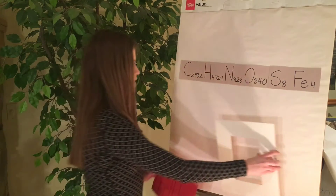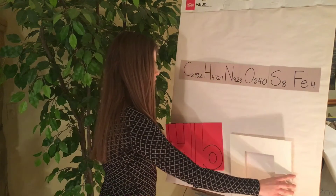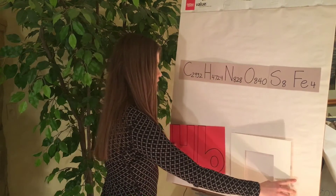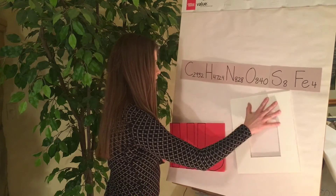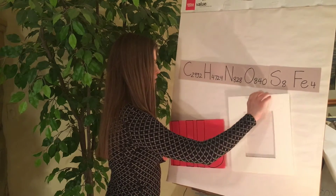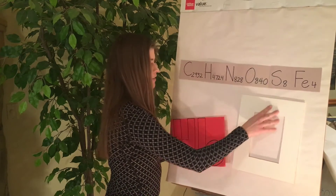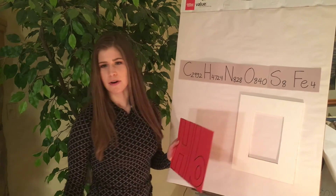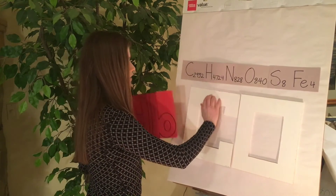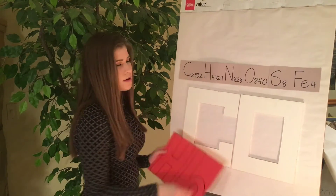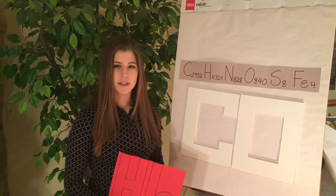When hemoglobin is bonded with oxygen, it is called carboxyhemoglobin. But when it is bonded with carbon monoxide, it is called carbon monoxyhemoglobin.